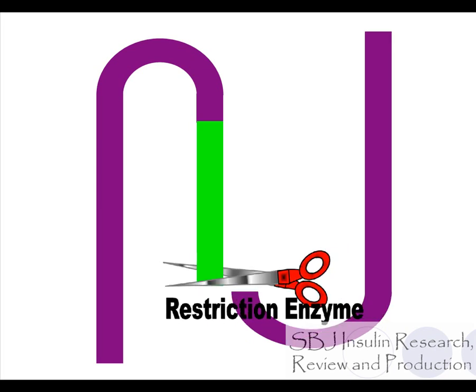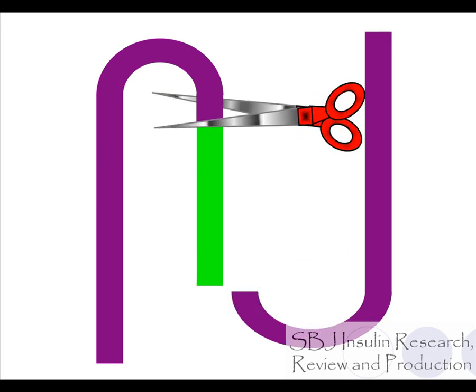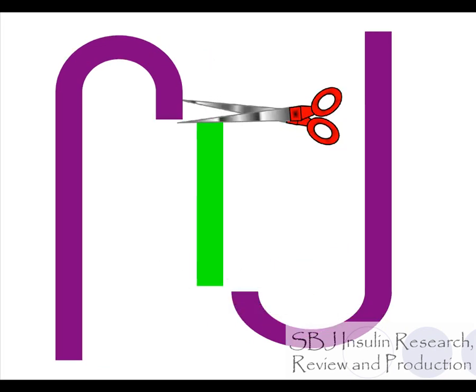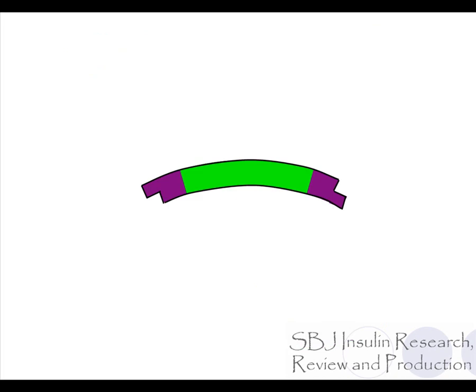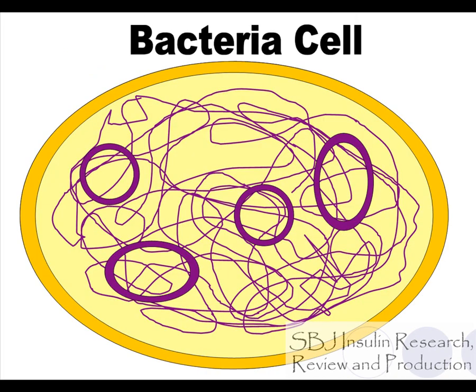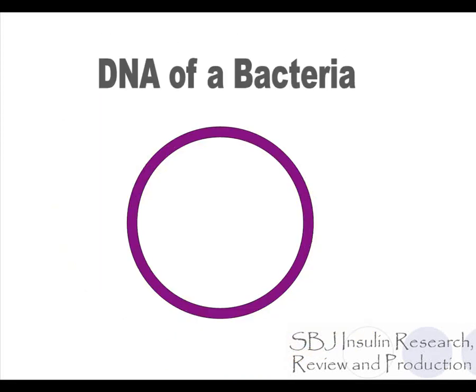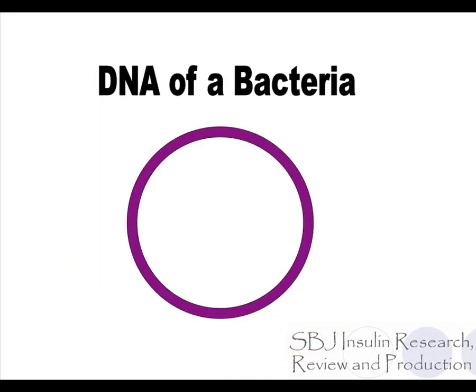Restriction enzymes are like scissors. They cut your DNA at certain sections. Here is the insulin gene. This is a cell of a bacteria, another type of organism. In bacteria, some of the DNA is in circles. These are called plasmids, and we can use them to insert a gene into the bacteria.